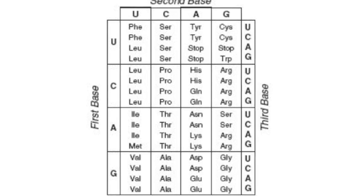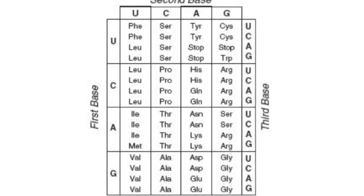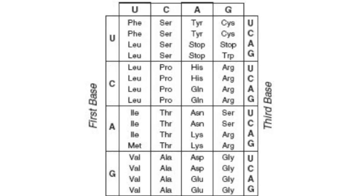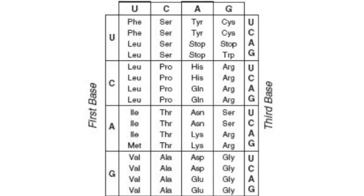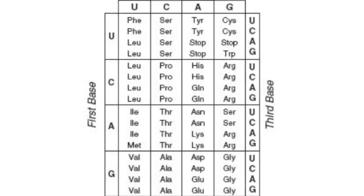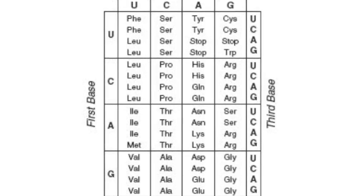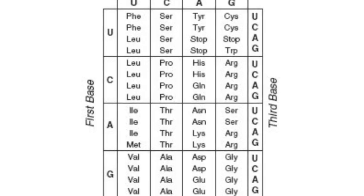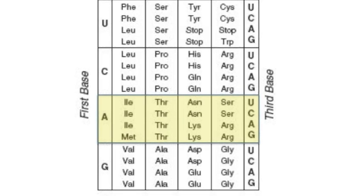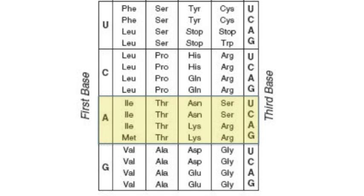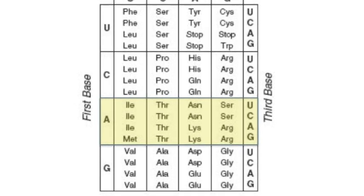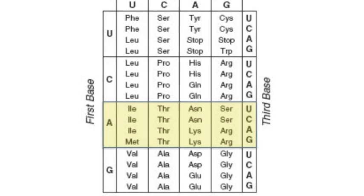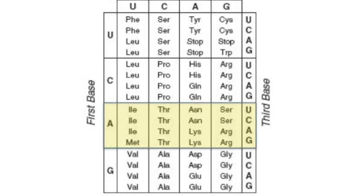In order to read a codon chart you need to look carefully at the mRNA codon. There should be three letters in the codon. The first base you're going to read on the left hand side of the diagram. So let's examine AUG if that was your start sequence. A would be the first letter in this sequence, so somewhere in the A row would be the answer to your question to find the amino acid sequence.